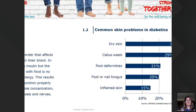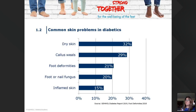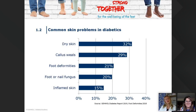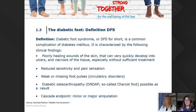The common skin problems seen in diabetic clients are dry skin, callus, corns, foot deformities, foot and nail fungus, and inflamed skin. There are more, but these are what we see most — what your clients come in with.